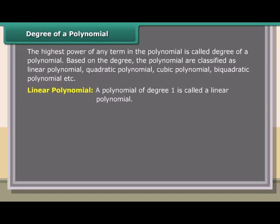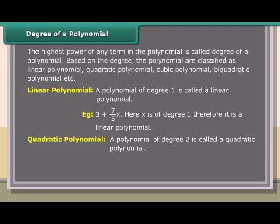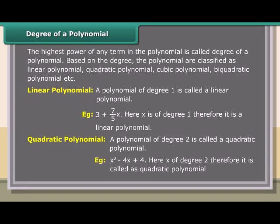Linear polynomial: A polynomial of degree 1 is called a linear polynomial. Example: 3 + (7/5)x, where x is of degree 1. Quadratic polynomial: A polynomial of degree 2 is called a quadratic polynomial. Example: x² − 4x + 4, where x is of degree 2, so it is a quadratic polynomial.